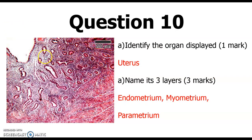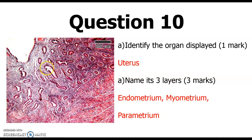Here is the uterus. You can appreciate the endometrial layer, which is thickened because of the proliferative phase under the effect of estrogen. You can also see the mammary gland — specifically the syncytiotubular glands that are prominent in this case.